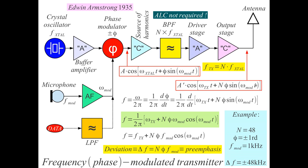With a 1 kHz modulation frequency from the microphone and a phase modulator doing ±1 radian — achievable with varactors — we can obtain a final deviation of ±48 kHz after 48× multiplication. 48 kHz is already a good deviation for high-quality radio broadcast. Such a transmitter may contain many stages, but its design is quite simple because no automatic level control is required — no complex feedback loops inside the transmitter.